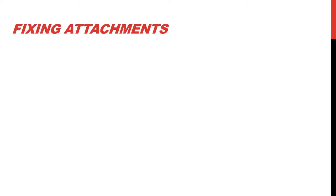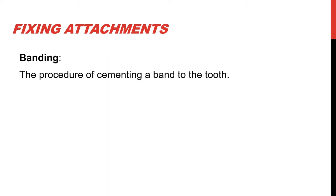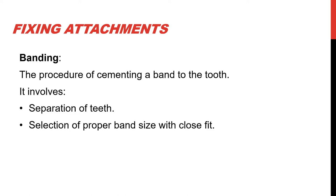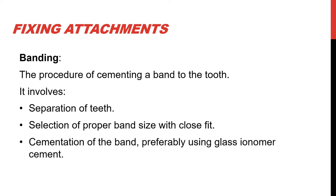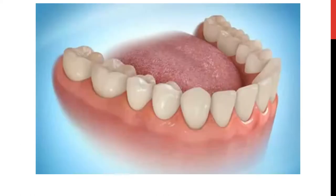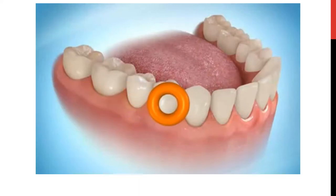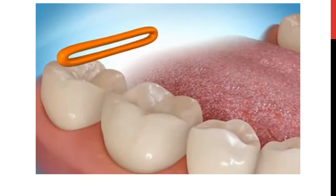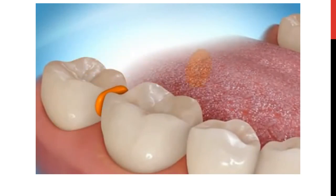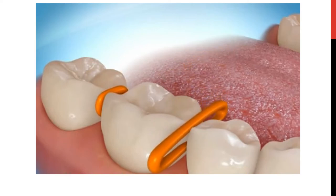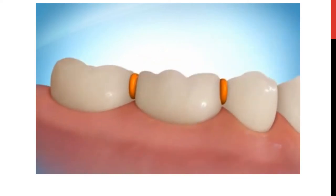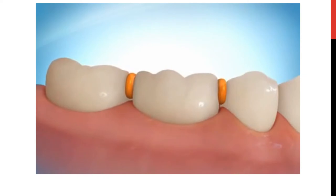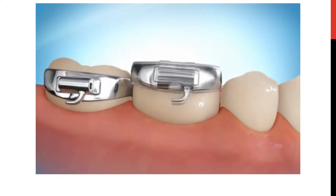We'll start with fixing attachments and we have two terms in this regard. We have banding, and by banding we mean the procedure of cementing a band to the tooth. This procedure involves separation of teeth, selection of proper band size with a close fit, and cementation of the band, preferably done using glass ionomer cement. This video shows the process of separation, for which we use elastic separators that are stretched and placed between the teeth. They will try to get their original shape, and by doing so they will push the teeth to the side, creating space for the placement of bands.